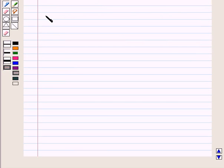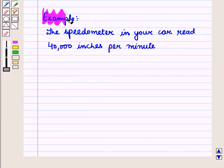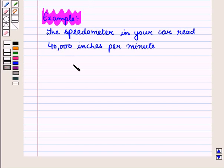We know that both inches and miles can be used to measure lengths. For example, the speedometer in your car read 40,000 inches per minute. In this example, we have measured the distance in inches.